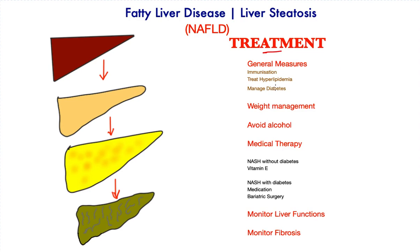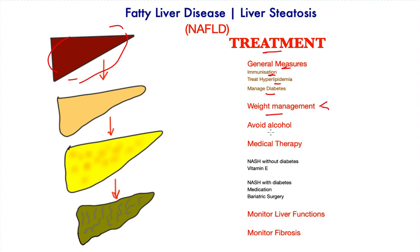In terms of treatment, for most patients general measures and weight management would be enough to reverse this progression and return the liver to a healthy state. Patients with fatty liver disease should think about immunization, specifically against hepatitis B. Serum lipids should be assessed and hyperlipidemia treated with lipid-lowering agents as well as diet. Control of diabetes is essential. Weight management may include diet and exercise. Patients ought to avoid high alcohol consumption, which will worsen the condition and cause further progression.